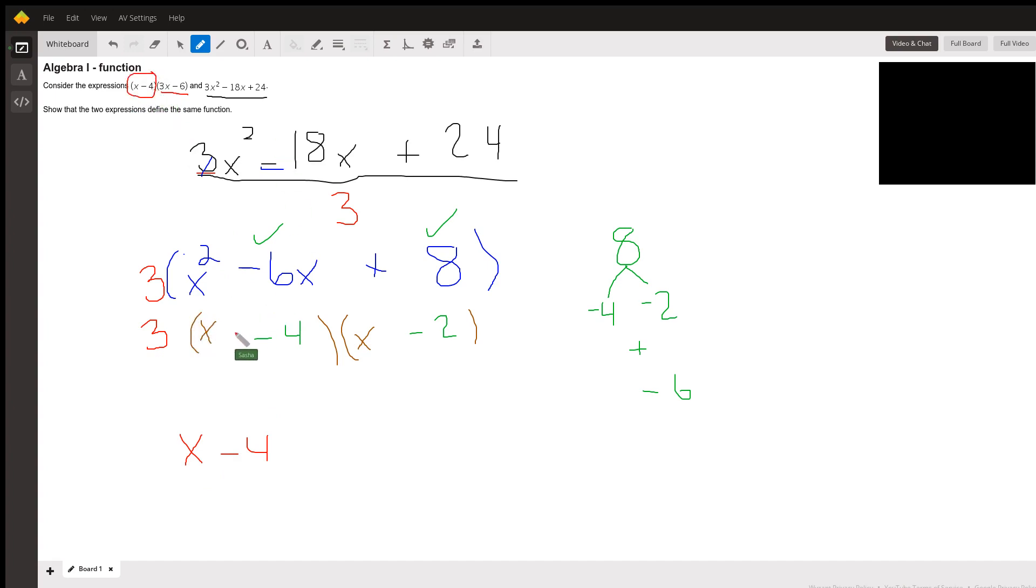Now, the cool thing about a GCF is because of mathematical rules, I can place it on any parentheses. So what if I placed it on this parentheses? So that's 3 times x is going to give me 3x and 3 times negative 2 is going to give me negative 6. Now, would you look at that? It checks out to be identical.